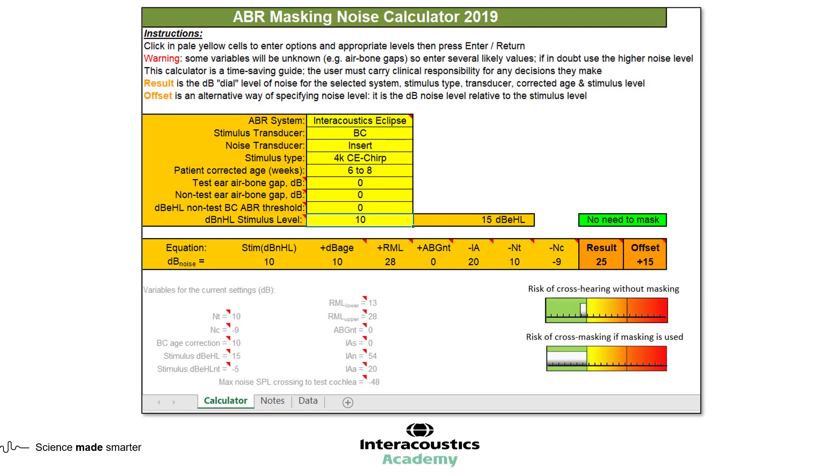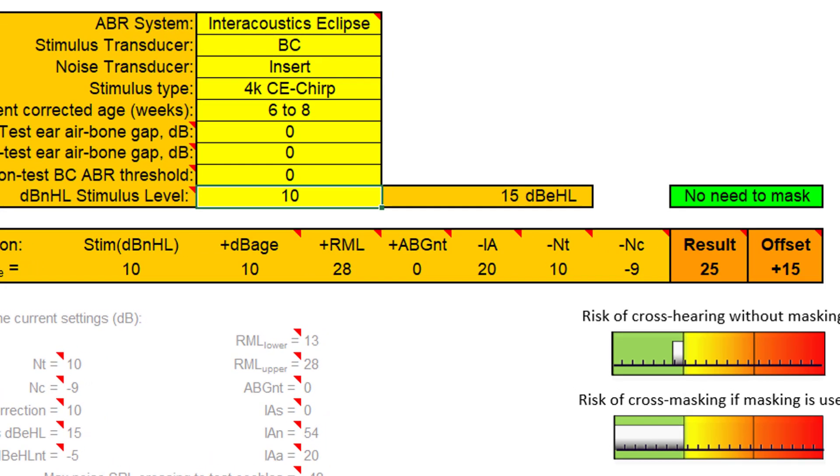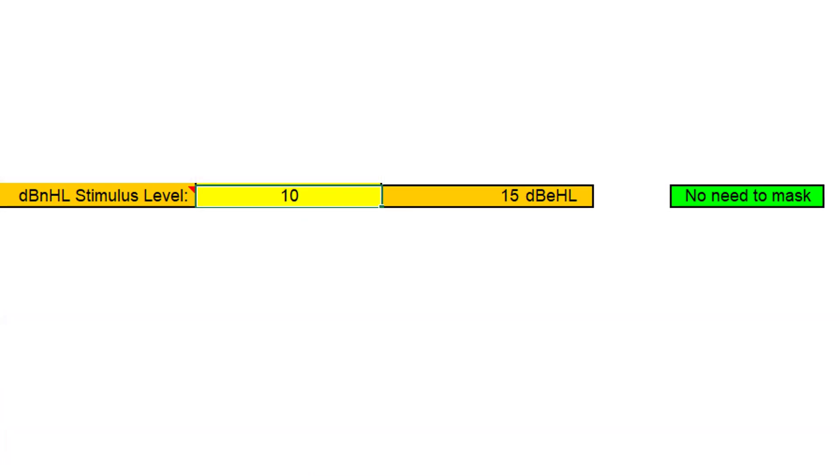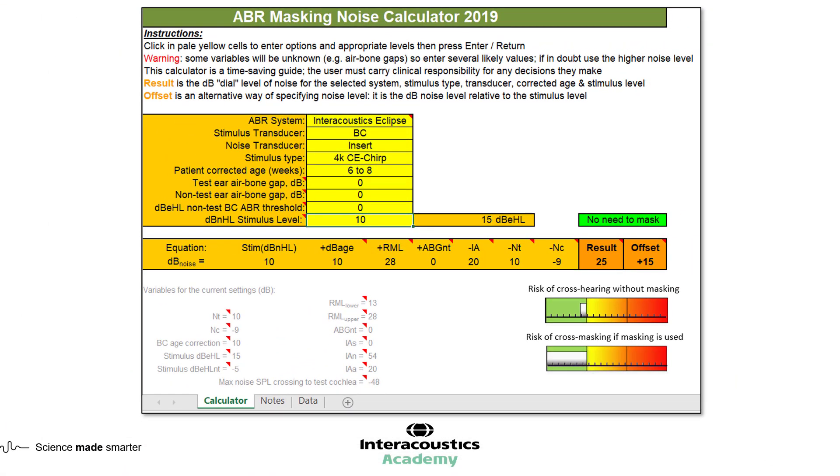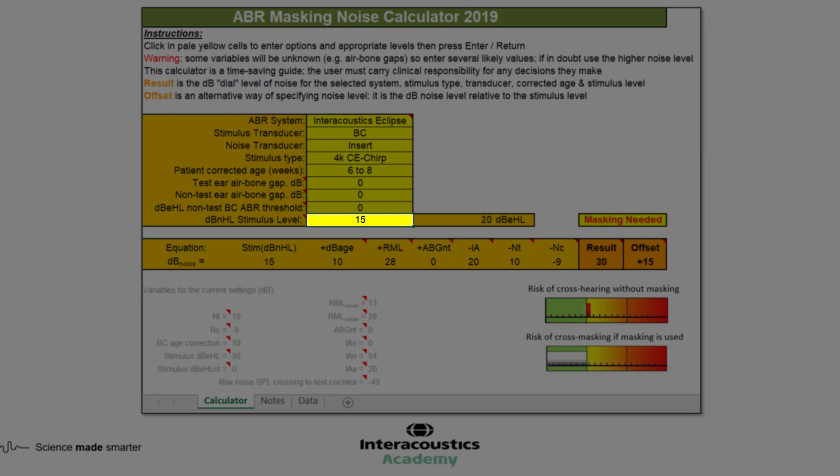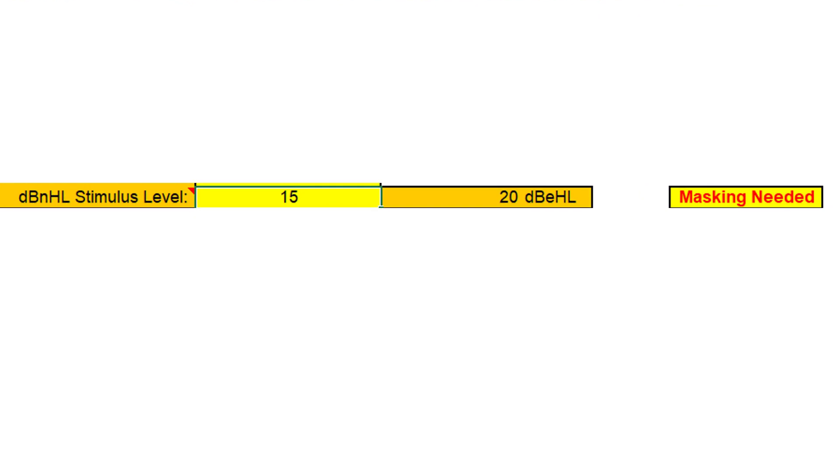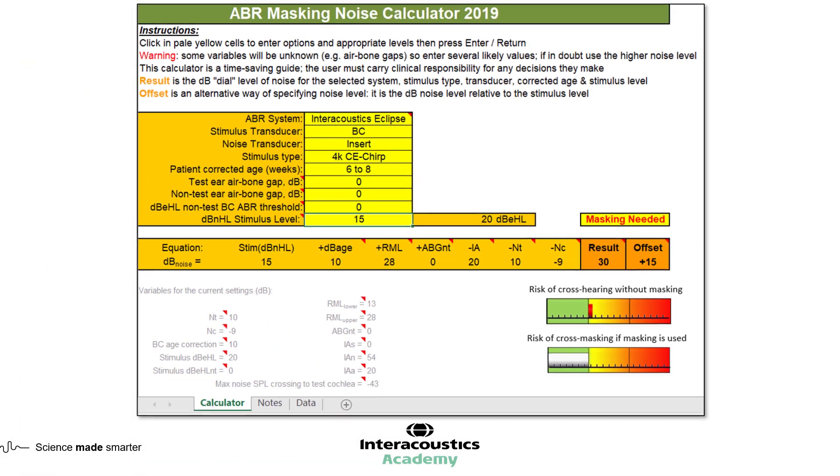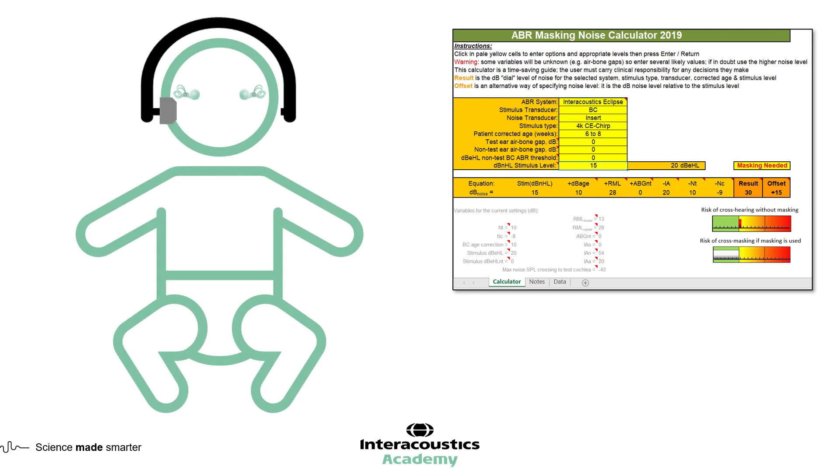For instance, when testing 4kHz narrowband CE-chirp bone conduction on a 6-8 week old, a response at 10 dB NHL, which converts to 15 dB EHL, will not require masking. However, if there isn't a response until you increase the stimulus level to 15 dB NHL, which equates to 20 dB EHL, masking will be needed. This is because the sound is now loud enough to potentially be crossing over to the other ear, and for a response to be generated by that cochlea.